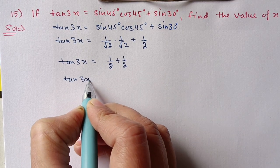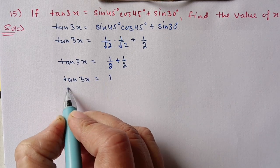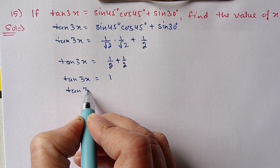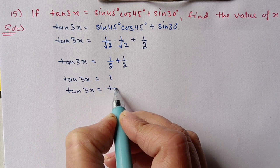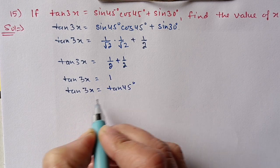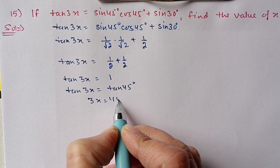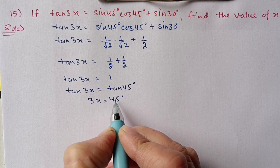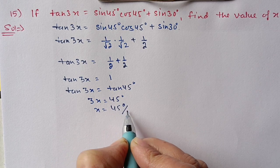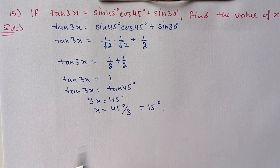Half plus half becomes 1. Now 1 can be changed into the tan value: 1 is the value for tan 45 degrees. It means 3x equals 45 degrees, and x equals 45 by 3, which equals 15 degrees.